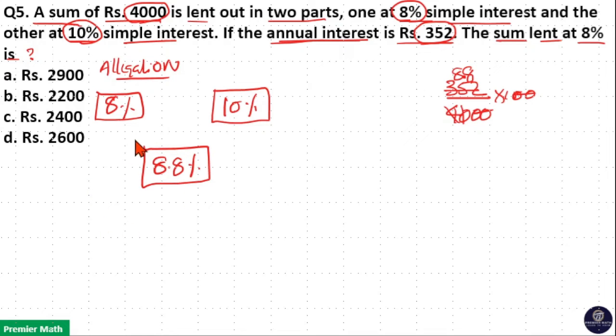Now, this 8% and 10% constitute this 8.8%. Take the difference between 8 and 8.8%, which is equal to 0.8%. Take the difference between 10 and 8.8%, which is equal to 1.2%. This is the ratio of money lent at 8% and 10% respectively.